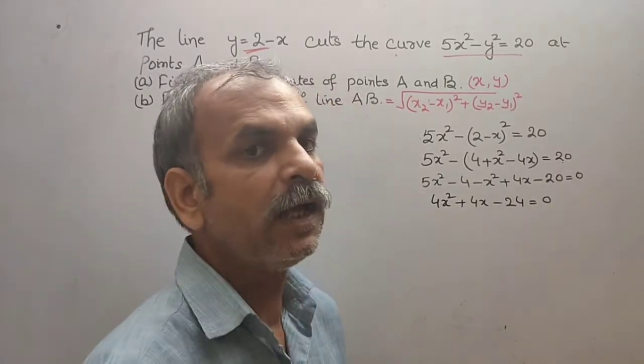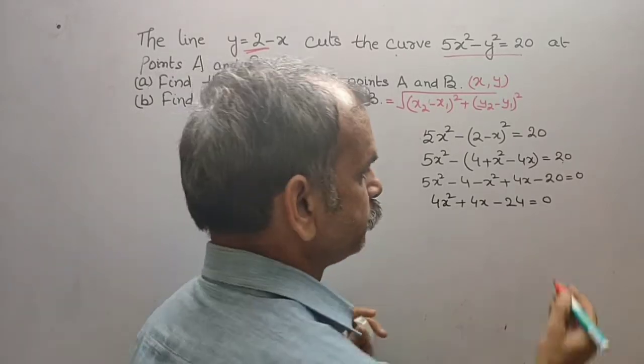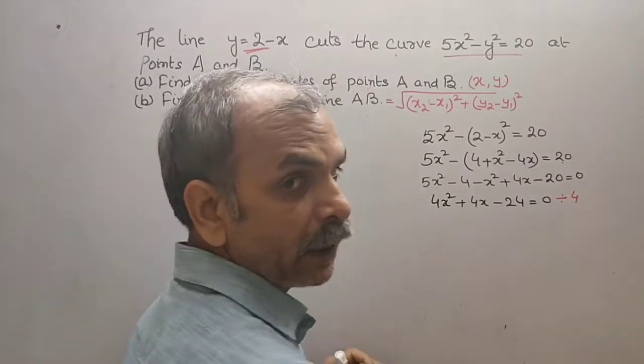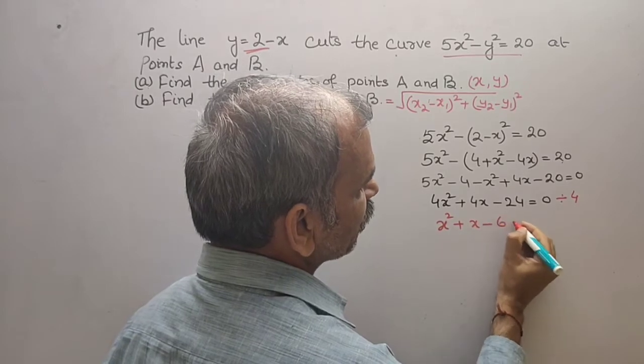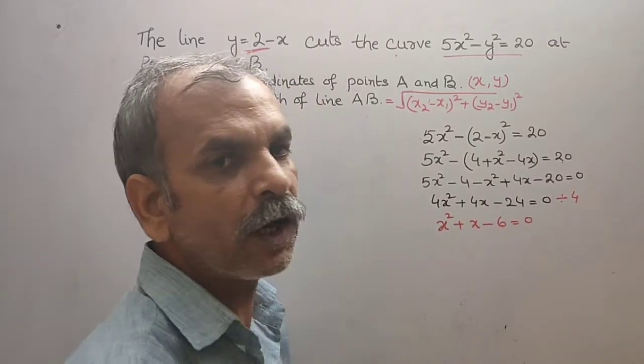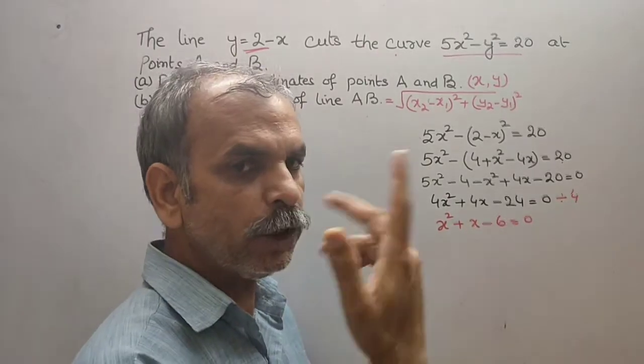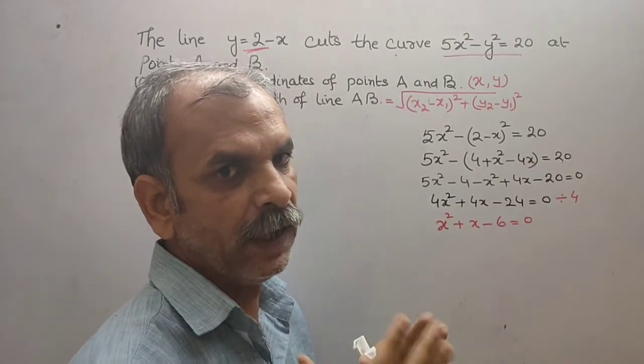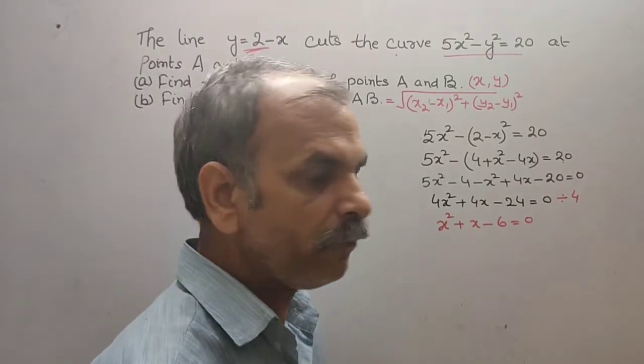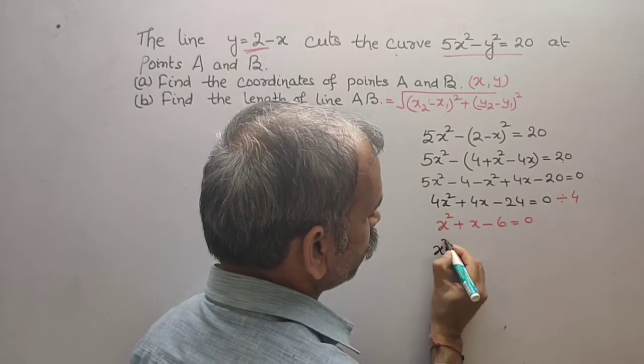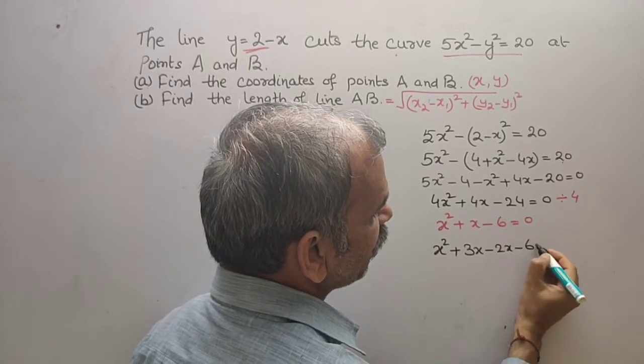Now solve this. 5x² - x² is 4x² plus 4x, and here you will get what? -24, that gives you 0. We can see every three terms are divisible by 4. We will divide it by 4. The equation, what we will get now: x² + x - 6, that gives you 0. Now we will go for middle term splitting. Can we do that? Yes. 6, that means 2 × 3 is 6, and 3 - 2 is 1. We get it. So that only we will write what? x² + 3x - 2x - 6, that gives you 0.